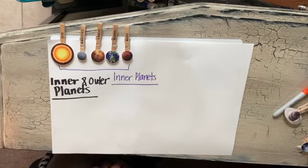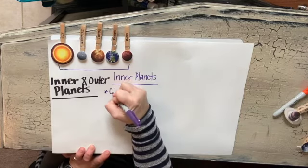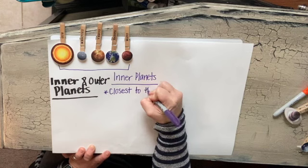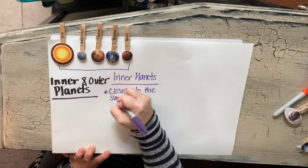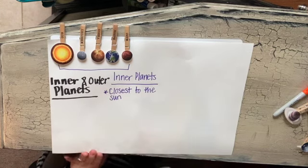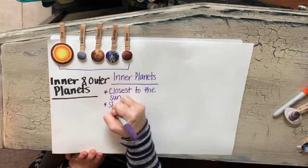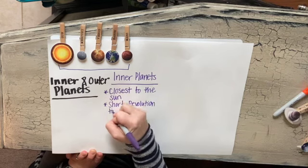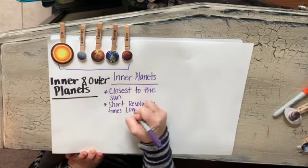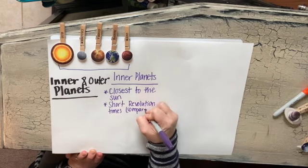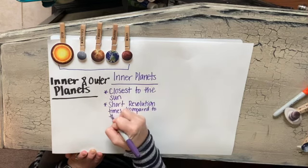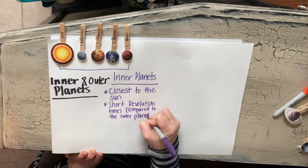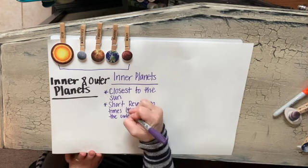The inner planets are the first four planets and they are closest to the Sun. Since these planets are so close to the Sun, they have a shorter revolution time than the outer planets. That means they can go around the Sun faster than the planets farther from the Sun.